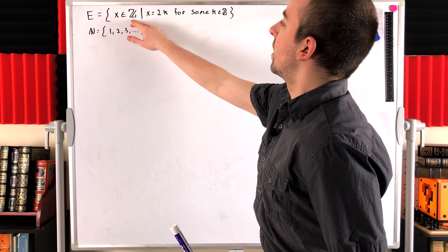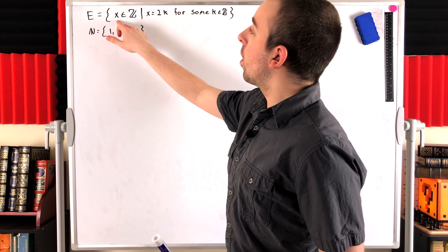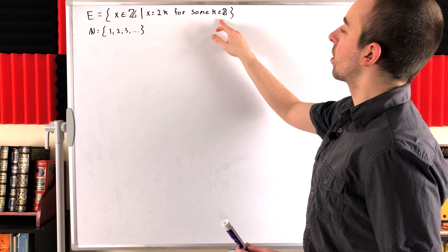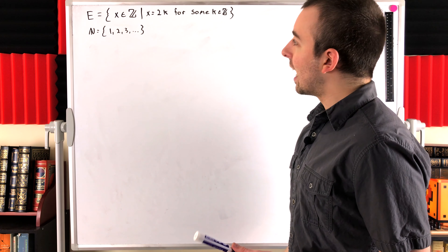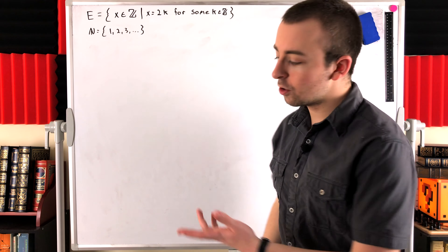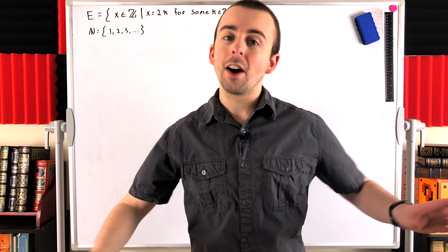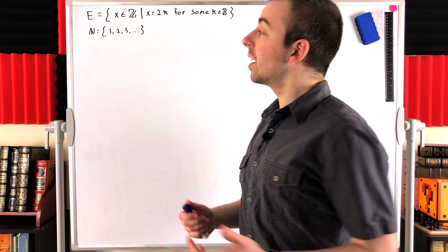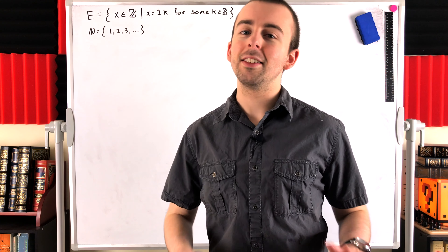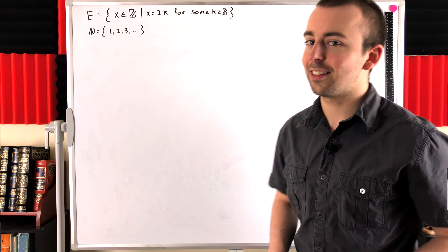The even numbers we can define in set builder notation as all integers x such that x is equal to 2k for some integer k. The naturals we're saying is the set containing 1, 2, 3, and so on. So our set of natural numbers does not include 0. However, if you wanted it to, we could adjust our function pretty easily to account for that, but this is going to be our set of naturals for this lesson.